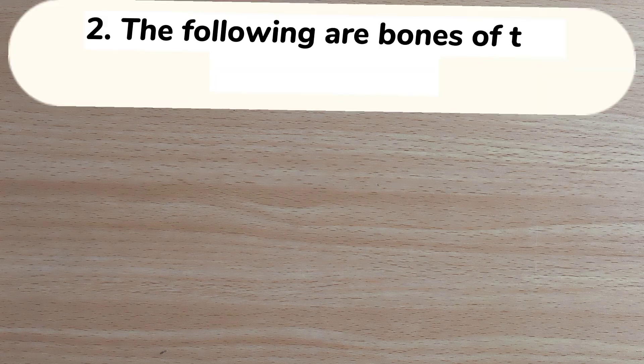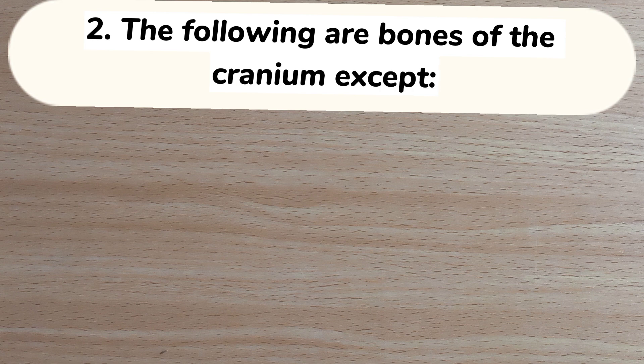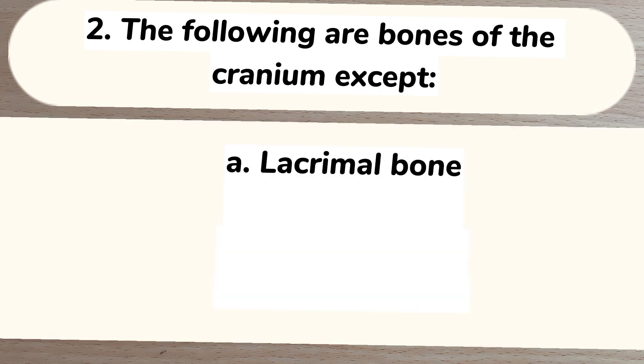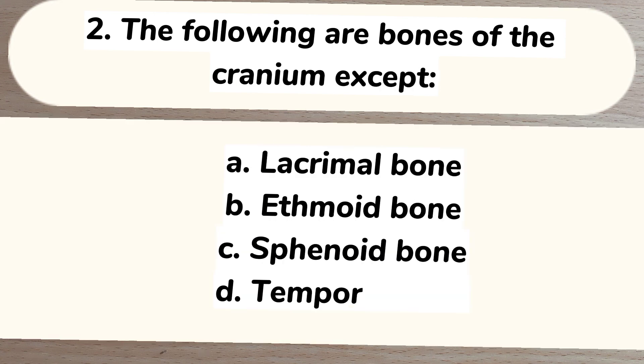Number 2. The following are bones of the cranium except: A. Lacrimal bone, B. Ethmoid bone, C. Sphenoid bone, D. Temporal bone. Answer: A. Lacrimal bone.